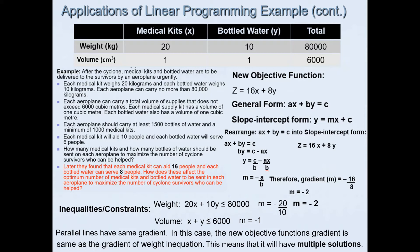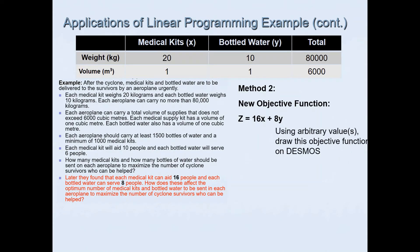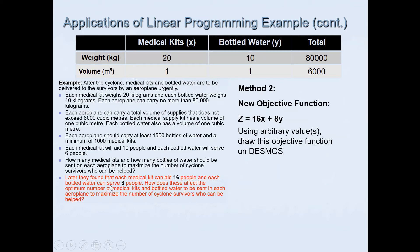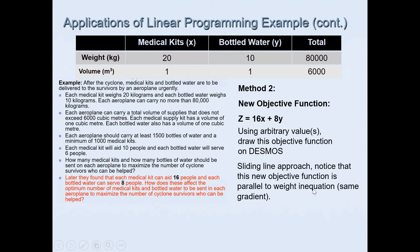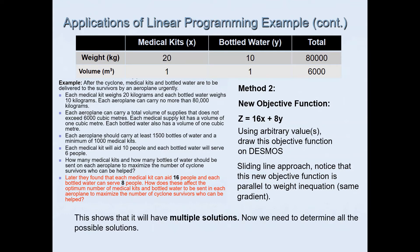So we will now find those multiple solutions. There are several ways to get the same results. We'll use some arbitrary random values and draw the objective function on Desmos using a sliding line approach. You will notice that the new objective function is parallel to the weight inequality — we've already confirmed this algebraically since both have a gradient of negative 2. Our goal is to find all possible solutions for this scenario.